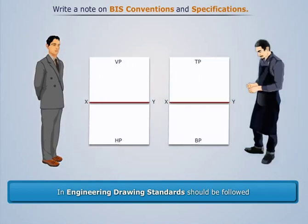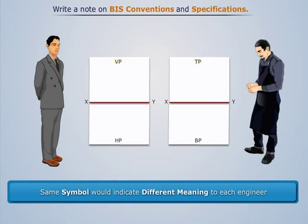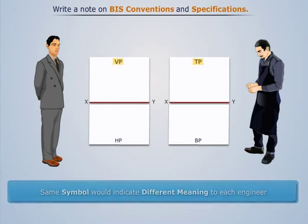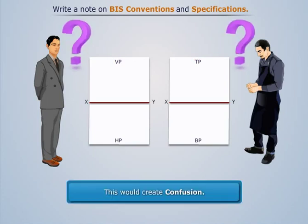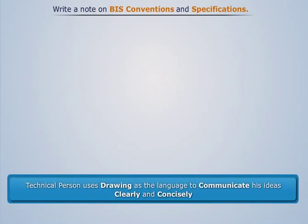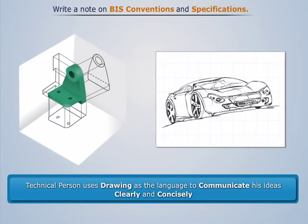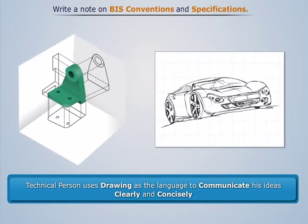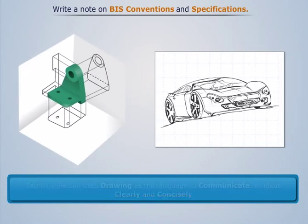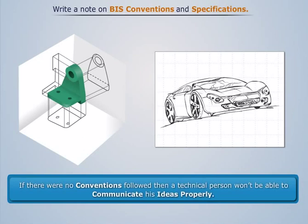If there were no conventions in engineering drawing, then the same symbol would indicate different meanings to each engineer. The symbols used in drawing would vary from one drawing to another, and this would create confusion. Moreover, every technical person uses drawing as the language to communicate his ideas clearly and concisely. If there were no conventions followed, then a technical person won't be able to communicate his ideas properly as his drawing won't be understood by others.